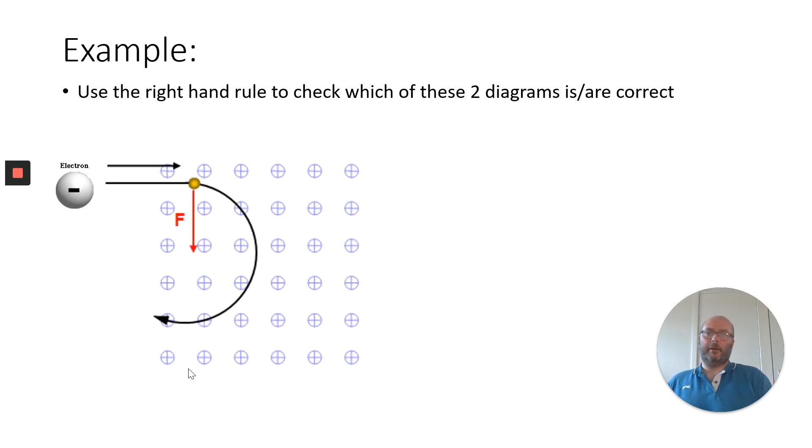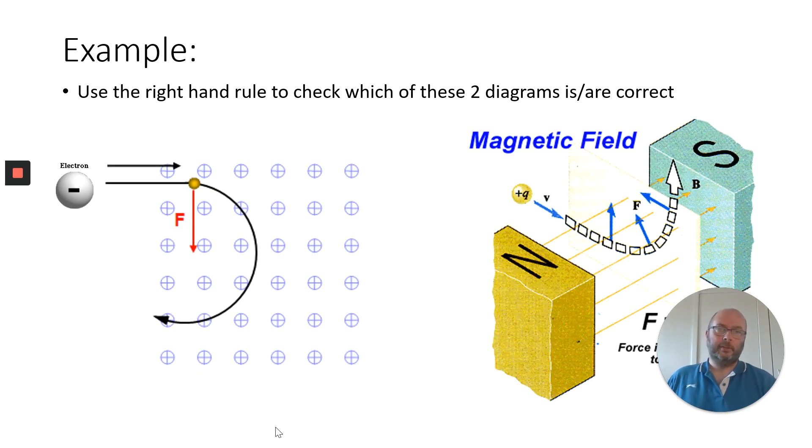So let's have a quick check at two diagrams. My camera is hiding a little bit of text but it doesn't really matter too much for this one because it's been stolen from the advanced higher course. So let's have a look at the one on the left hand side first of all.